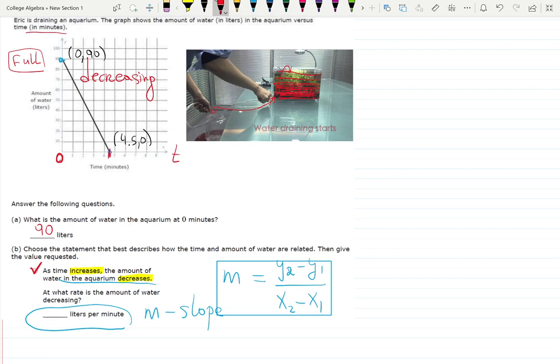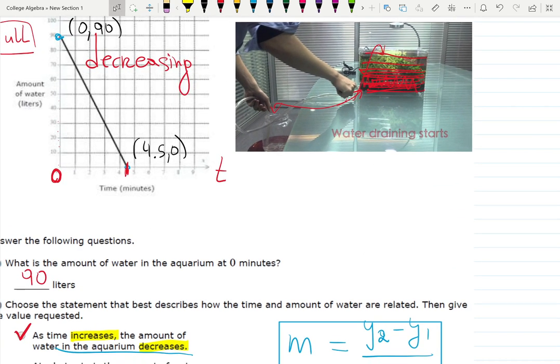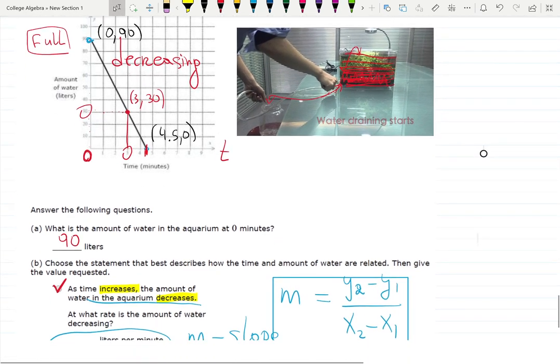But you also can use something more reliable, because if I'm not sure if it's half or not, it's hard to see. But this one I'm sure - this point is (3, 30), right? So you can use that, and you can check the answer will be the same. So that's your choice.